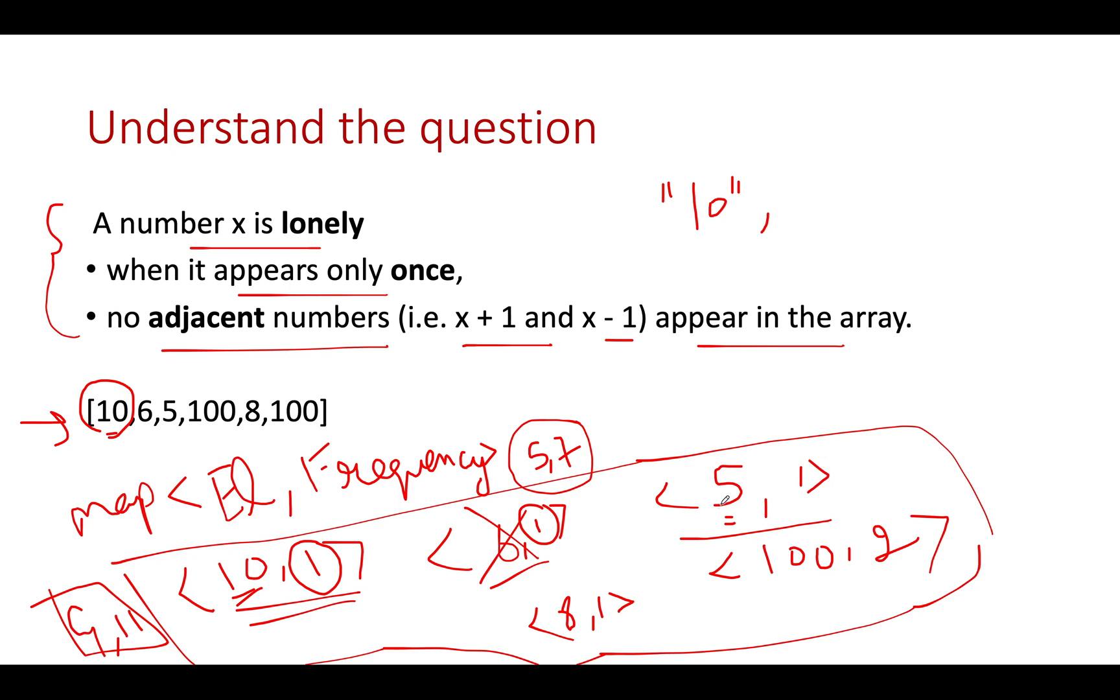Next is 5 with frequency 1. The first constraint is met. For the second constraint, I check for 4 and 6. Since one is present in the map, I skip this entry. Let's proceed. Next is 8 with frequency 1.